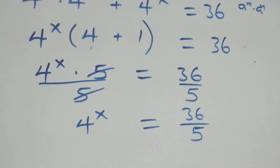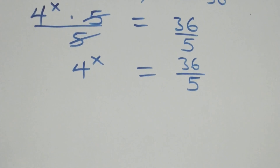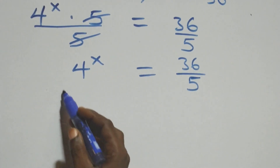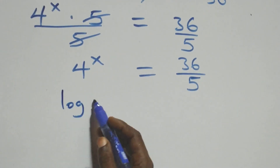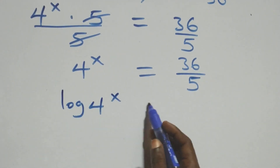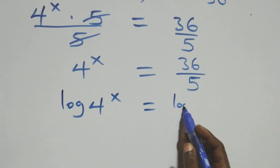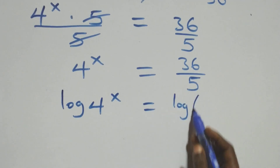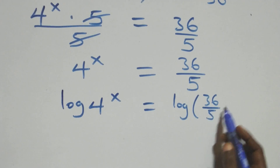The next step: we take the log on both sides. That is, we have log of 4 raised to power x equals log of 36 over 5.